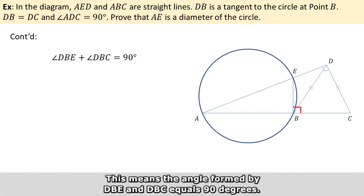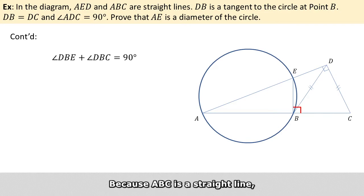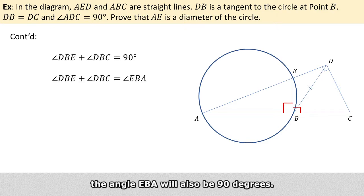This means the angle formed by DBE and DBC equals 90 degrees. And because ABC is a straight line, the angle EBA will also be 90 degrees.